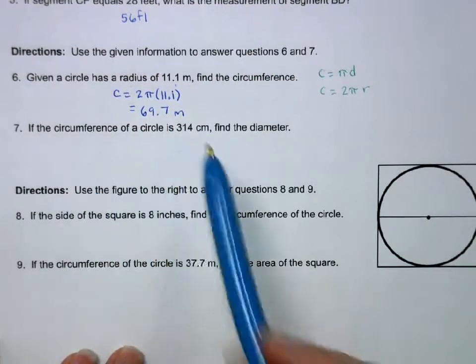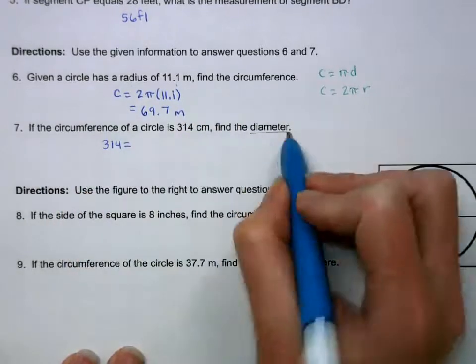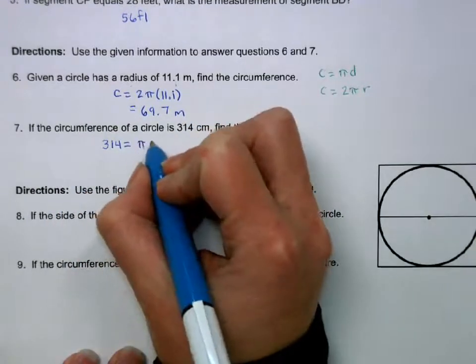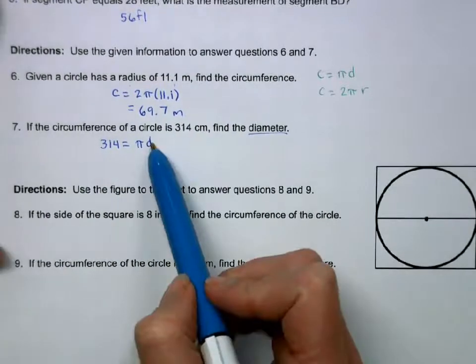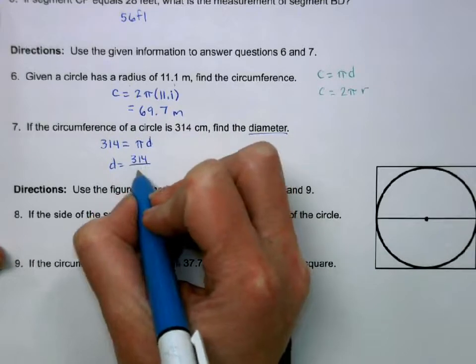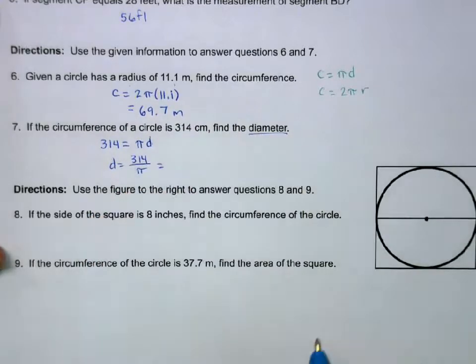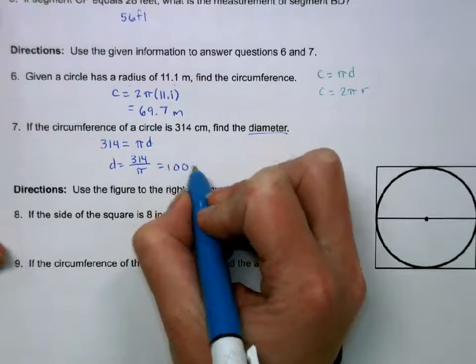Here, we're given the circumference. So 314 equals, we want the diameter, so I'm going to set that equal to pi d. Algebraically, to get d by itself, I'm going to divide by pi, which gives me 100 centimeters.